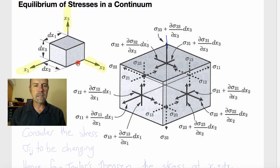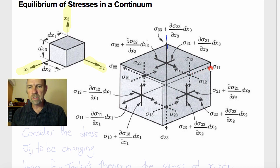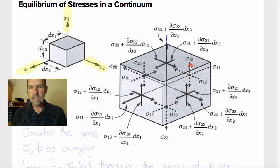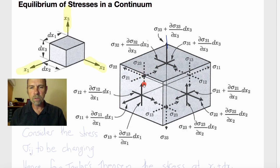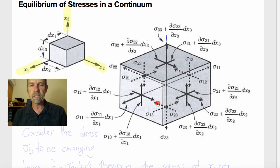To do that, we're going to start by considering this elemental parallelepiped with infinitesimal dimensions dx1, dx2, and dx3. On the back faces here are the tractions we defined before. On the x1 face, the normal stress is sigma11, and there are two shearing tractions sigma13 and sigma12. Similarly on the x2 face we see sigma22, sigma21, and sigma23, and on the lower face we see sigma33, sigma13, and sigma23. These are defined as before, although these are actually the negative faces of this parallelepiped.